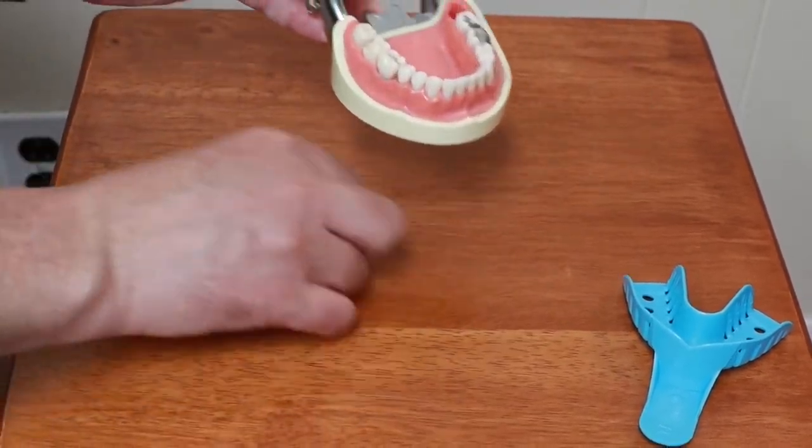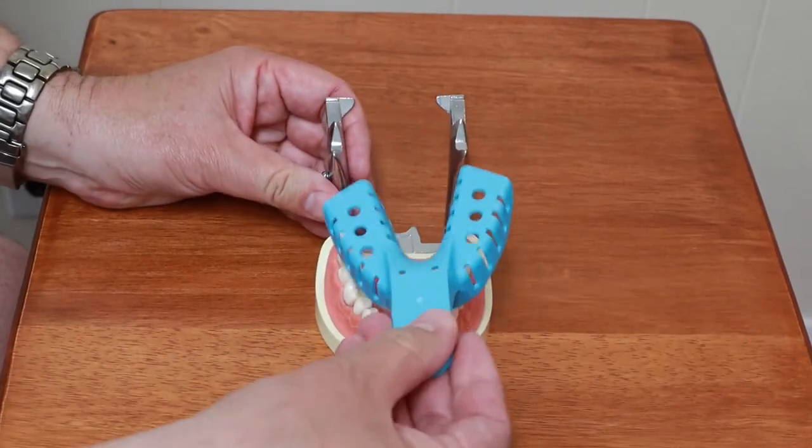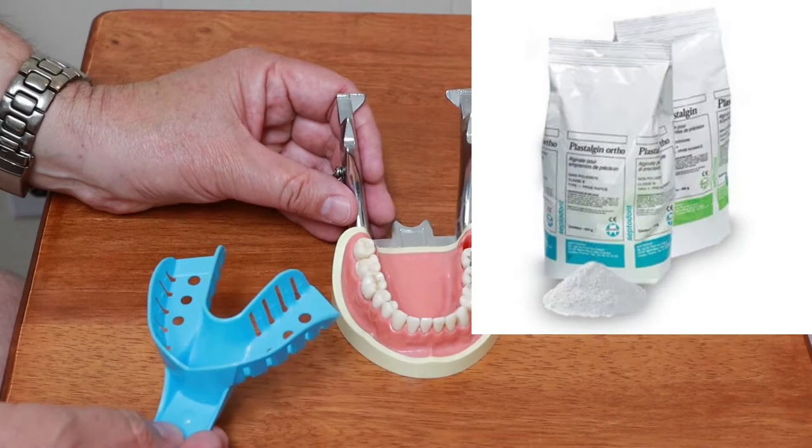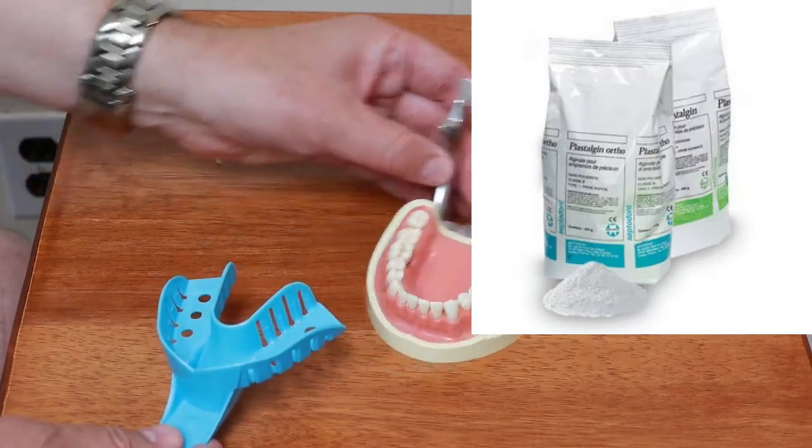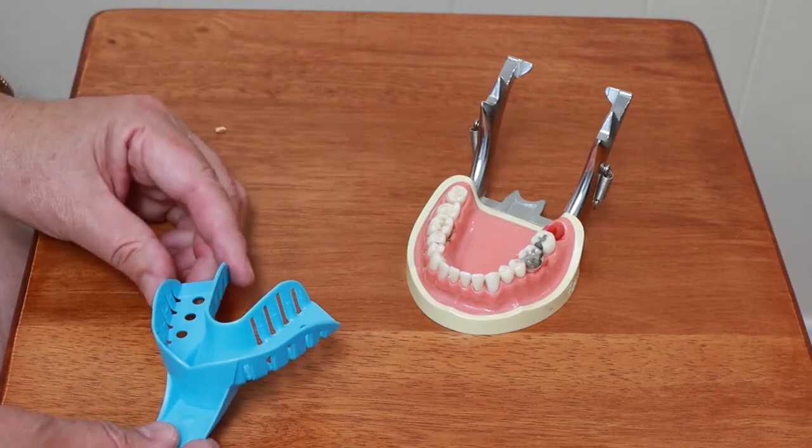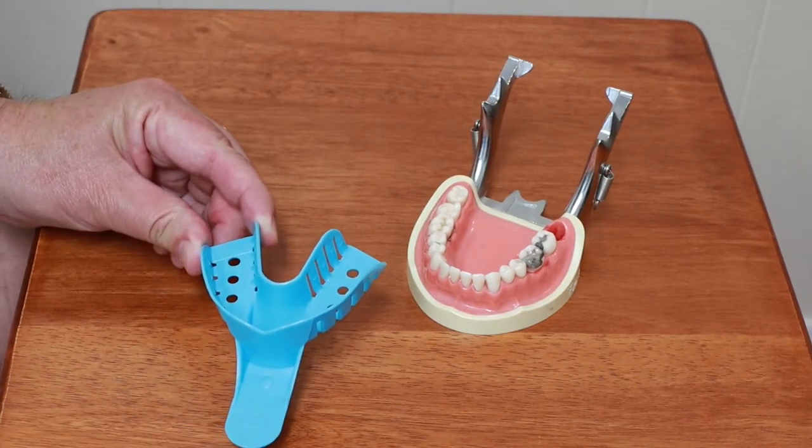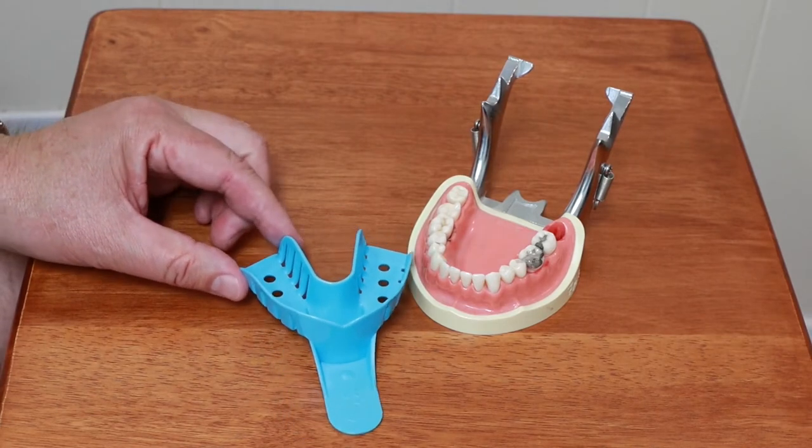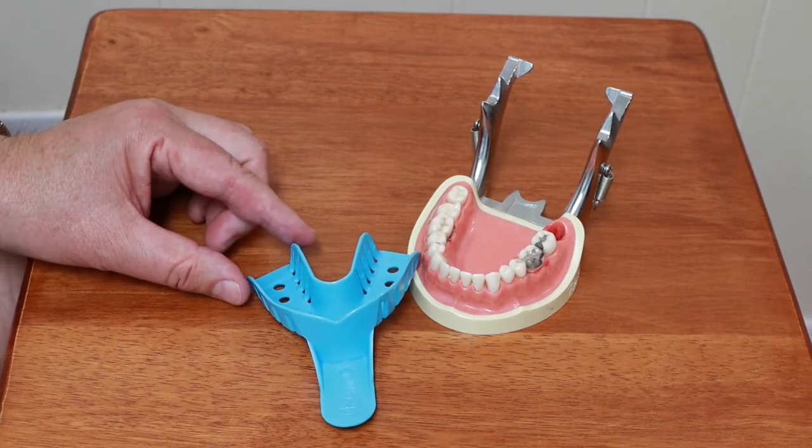Again I'm going to use a stock tray and this time I'm going to use a material called alginate. It's just for the opposing model. It's not quite as accurate as the VPS material but it's accurate enough for an opposing model. Let me go mix that up next.